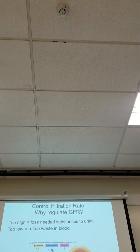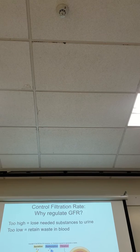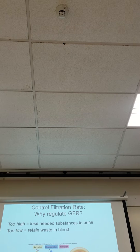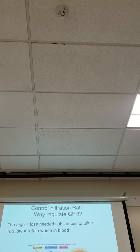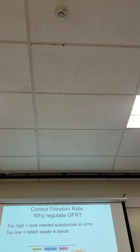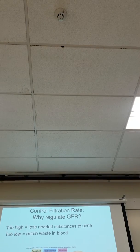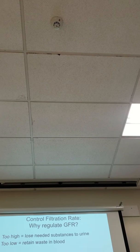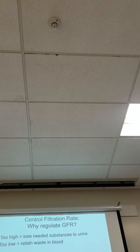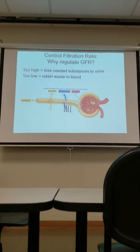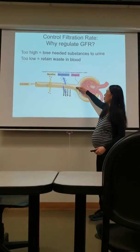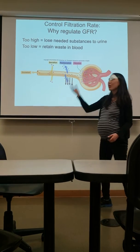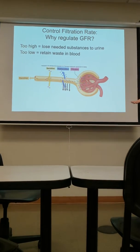Think of it like a grocery store checkout line. You put all your groceries on the conveyor belt and right by the line they put candy and magazines — stuff you don't really need. Because you're just hanging around, you start looking at it and buy the excess stuff. Same thing here: if your filtrate is going through too slow, you're going to start to reabsorb some of the waste too. You'll start retaining more of the waste in your blood instead of letting it pass through and end up in the urine.